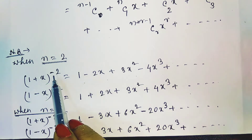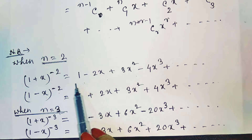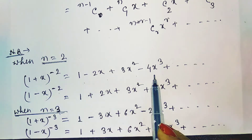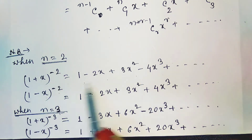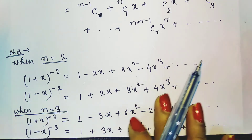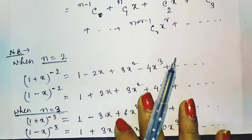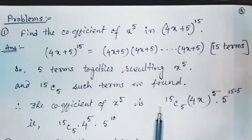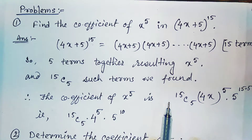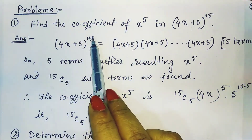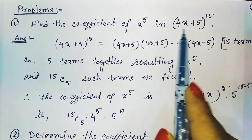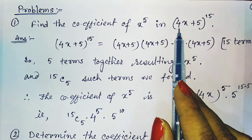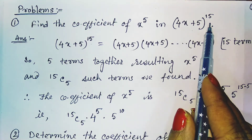If the power is positive, then it is a finite series; if the power is negative, then it is an infinite series. Now there are a few problems related to the binomial. The first problem is: find the coefficient of x^5 in the expression (4x + 5)^15.